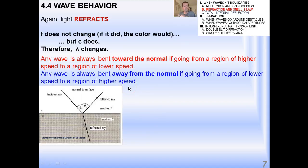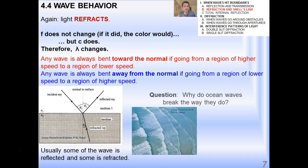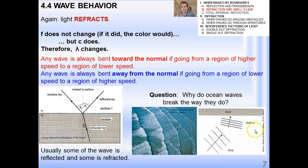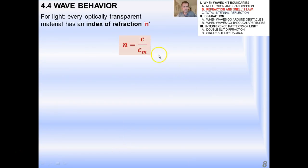Now, any wave is bent towards the normal if going from a region of higher speed to a region of lower speed. It's bent away from the normal if going from a region of lower speed to a region of higher speed. So, this is really just a different way of saying everything that we've said before, and usually some of the wave is reflected and some refracted. And just to kind of bring you back to the real world here, why do ocean waves break the way they do? Well, their wave fronts are actually refracted because they go from deep to shallow water right before they get to the shores. That's why you see all these kinds of interesting patterns of ocean wave fronts along a smooth, sandy beach where the increase in depth is quite uniform from the beach to the deep water.